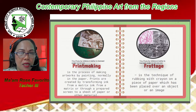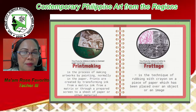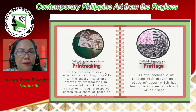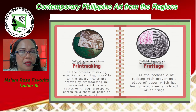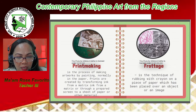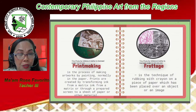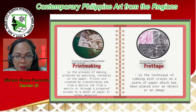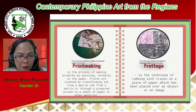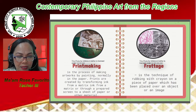Printmaking is the process of making artwork by printing, normally on paper. Prints are created by transferring ink from a matrix or through a prepared screen to a sheet of paper or other material. Common types of matrices include metal plates — usually copper, zinc, or polymer — for engraving or etching; stone, aluminum, or polymer for lithography; blocks of wood for woodcut and wood engraving; and linoleum for linocuts. Screens made of silk or synthetic fabrics are used for the screen printing process.